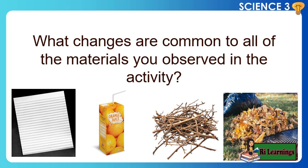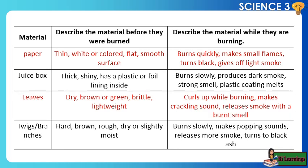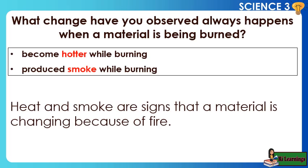What changes are common to all of the materials you observed in the activity? These are two things that always happen when something is burned: they become hotter while burning, and they produce smoke while burning. Heat and smoke are signs that a material is changing because of fire.